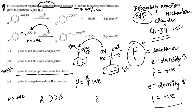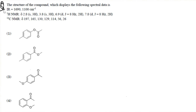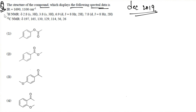Let's move to another question from the December 2019 exam. The question asks for the structure of the compound which displays the following spectral data: IR data, HNMR data, and C13 NMR data are all given. From the IR and NMR data alone it is good enough to find the product.